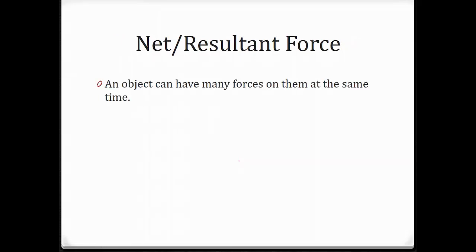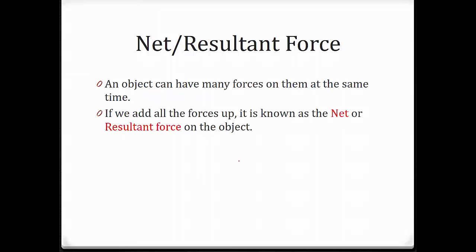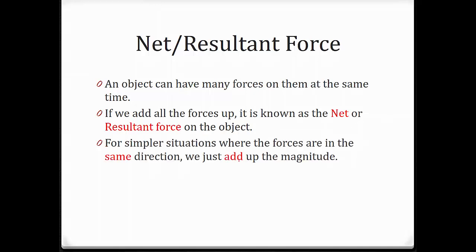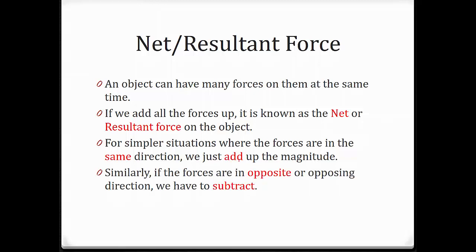Next, we are going to understand what net or resultant force is. An object could have many forces on it at the same time. If you add up all the forces, it is known as the net or resultant force on the object. For a simpler situation where forces are all in the same direction, we just add up the different magnitudes. However, if the forces are in opposite or opposing directions, we have to subtract.